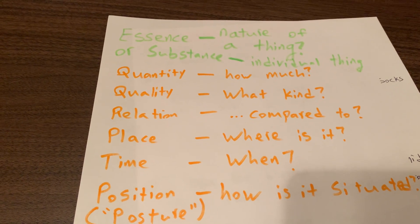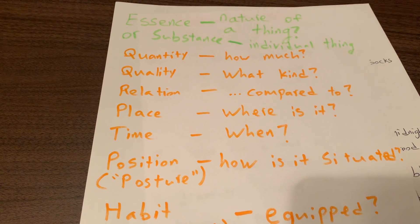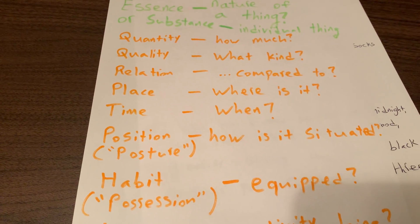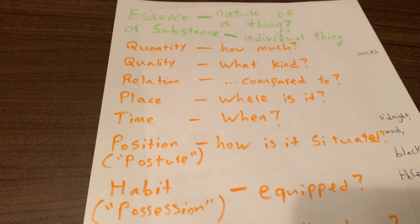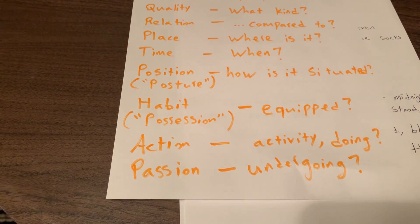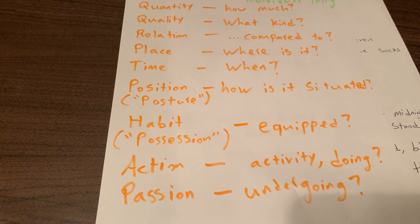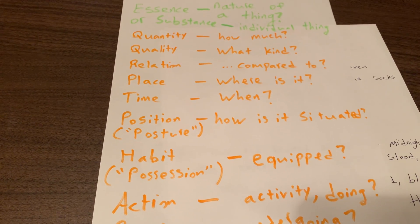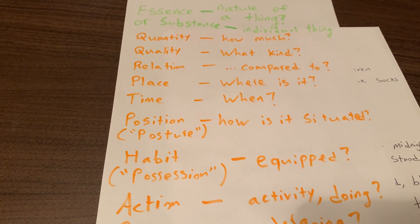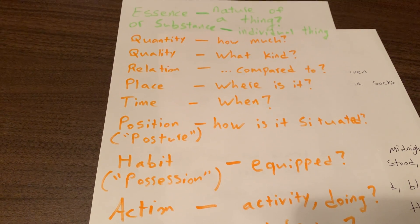But we can also have references to an individual thing, a substance. Then we have such categories as quantity — how much; quality — what kind; relation — compared to; place — where is it; time — when; position, or what Peter Kreeft calls posture — how is it situated; habit, or what Peter Kreeft calls possession — to be equipped in one way or another; and then action — an activity you're doing; and passion — an undergoing. Philosophers and logicians have debated this list. Some have thought we can simplify it; others have thought you can add new categories. But in any case, let's work with it.